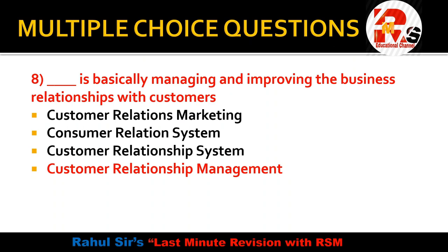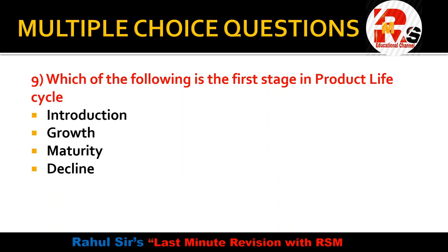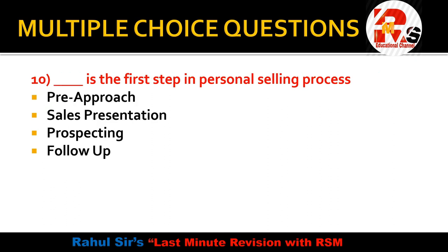Question number 9: Which of the following is the first stage in the product life cycle? The stages are Introduction, Growth, Maturity, and Decline. The first stage is Introduction. First we introduce the product, then it grows, then reaches maturity, and then goes into decline.